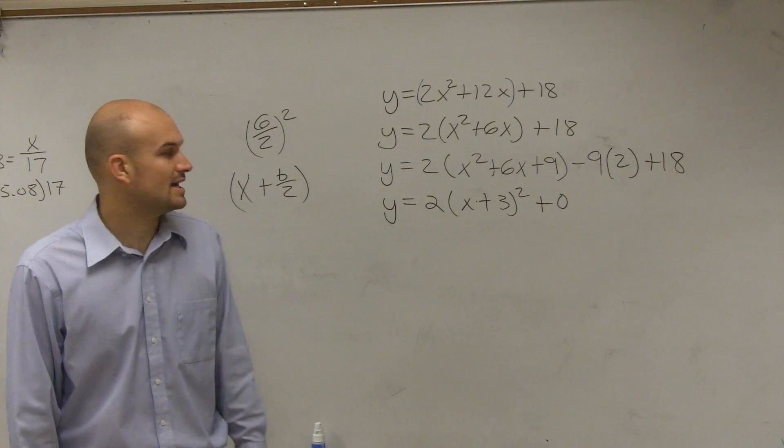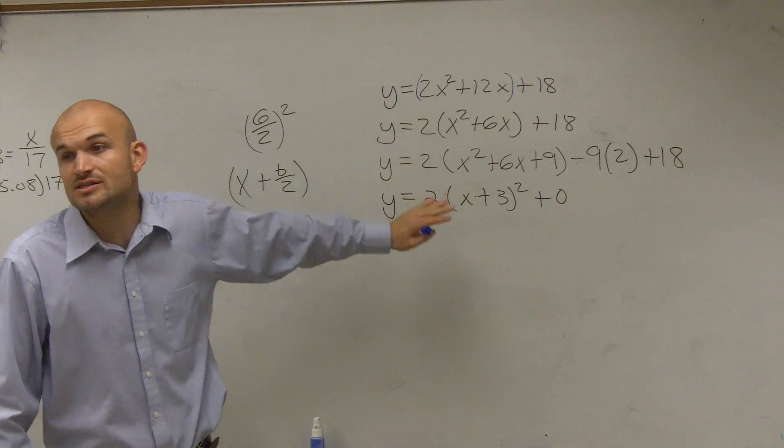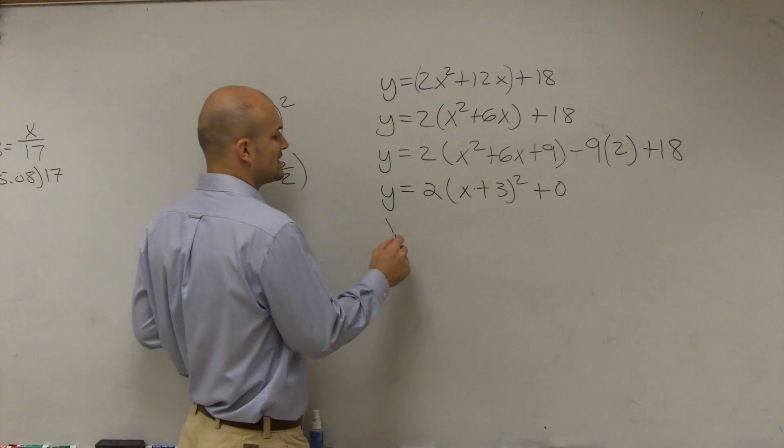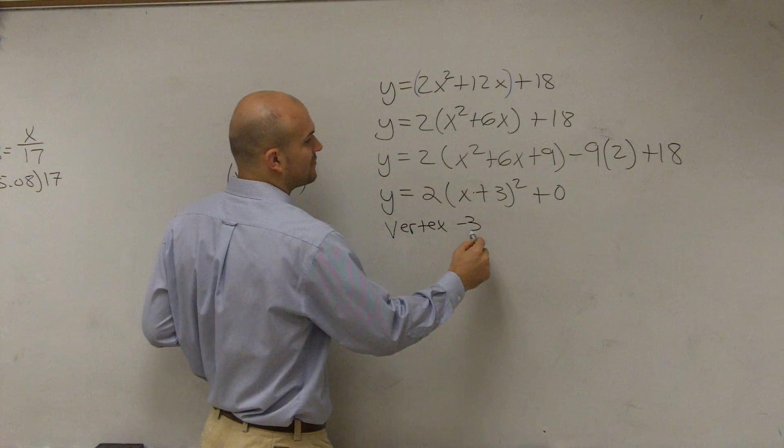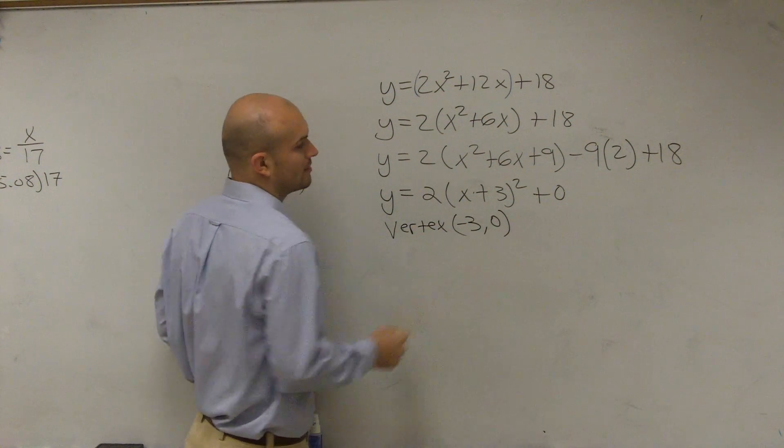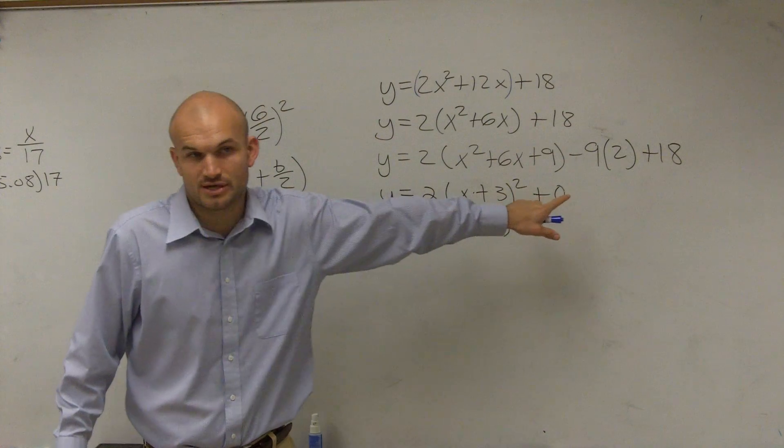So now, you can see that here is our same exact problem, but now it's in vertex form. Well, since it's in vertex form, we can now determine our vertex is going to be negative 3 comma 0, where your vertex is your h comma k.